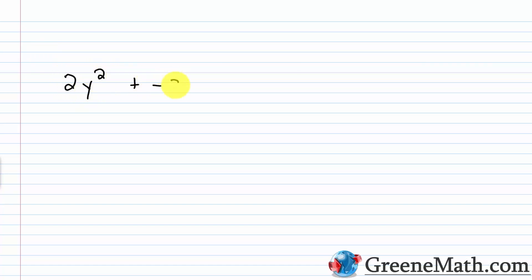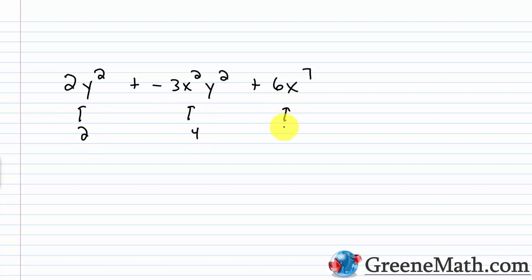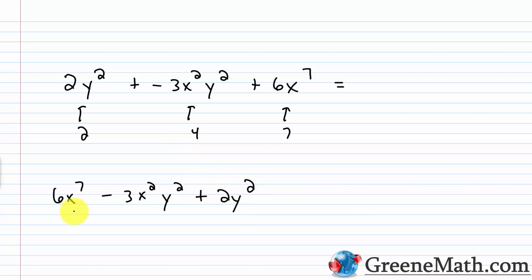When we encounter a polynomial with more than one variable and want to write it in standard form, we go by degree first. For example, with 2y squared plus negative 3x squared y squared plus 6x to the seventh power, the degrees are 2, 4, and 7 respectively. So in standard form: 6x to the seventh power, then minus 3x squared y squared, then plus 2y squared.